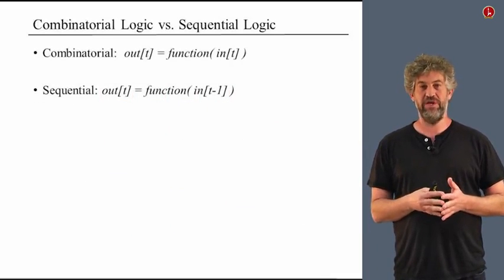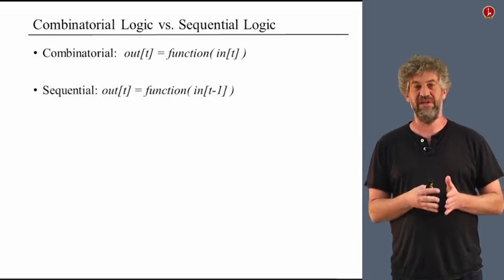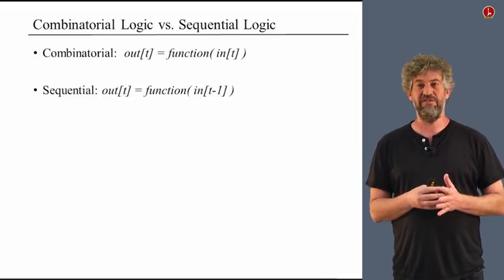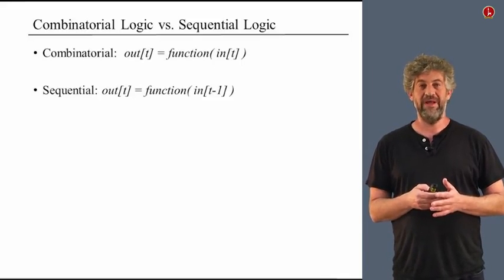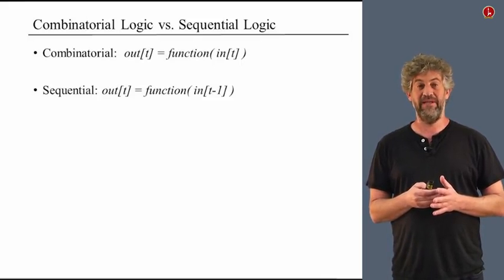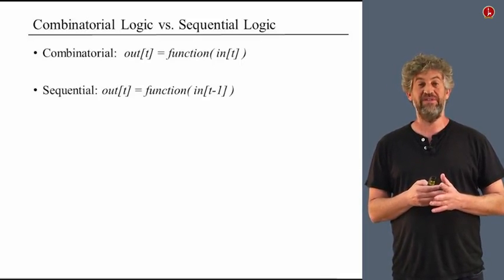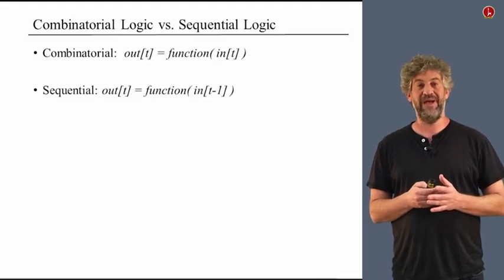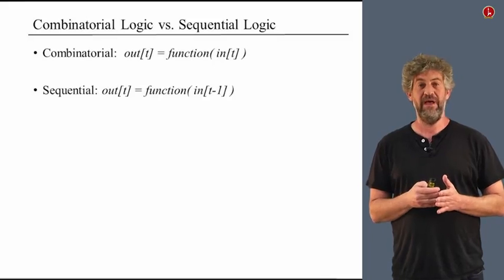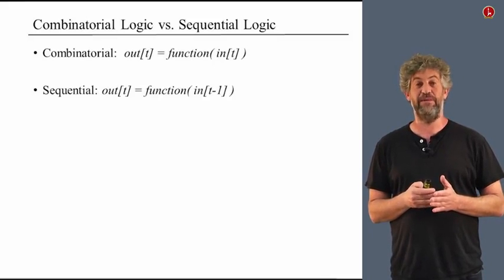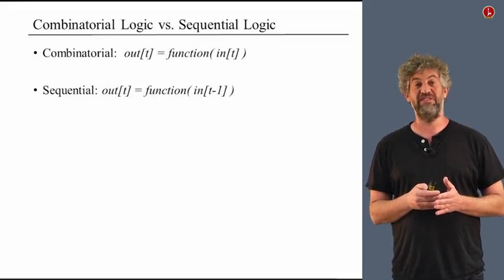So now we've reached a situation where we have integer time units, and we know that something can happen at every different time unit. All the logic we talked about in lectures one and two was combinatorial — the output at time t completely depended on the input at time t. There was no information moved from time t minus one to time t. What we're talking about with sequential logic is that the output at time t depends on the input at time t minus one. We remember things from the last period, and based on the previous input at the previous time step, we actually compute our output at the new time step.